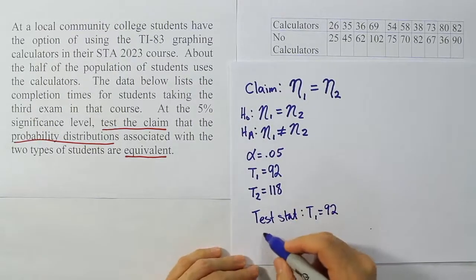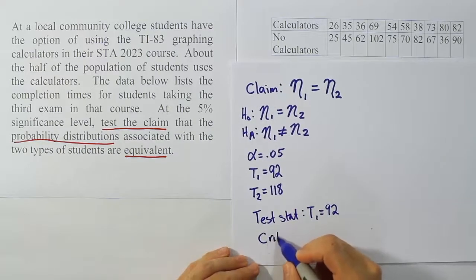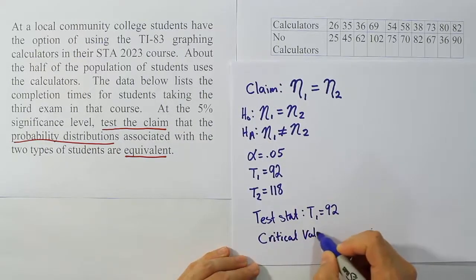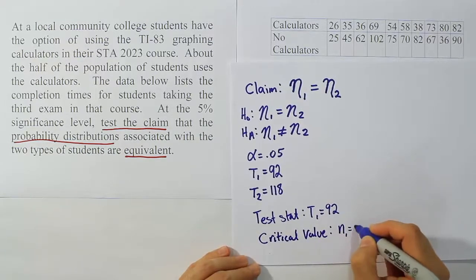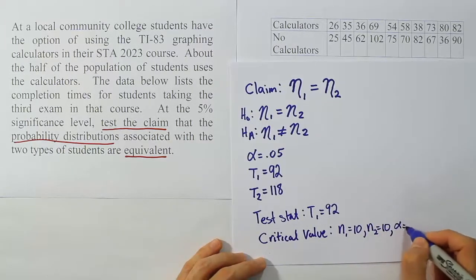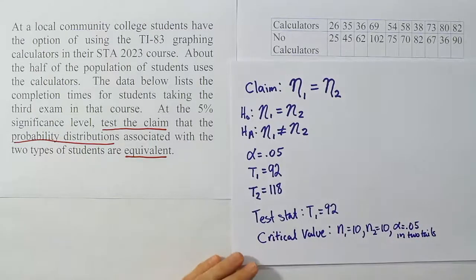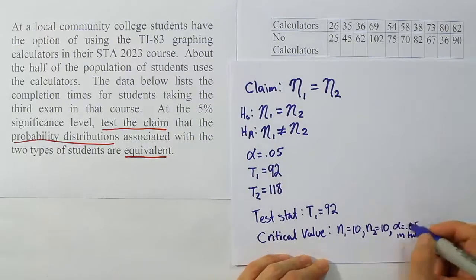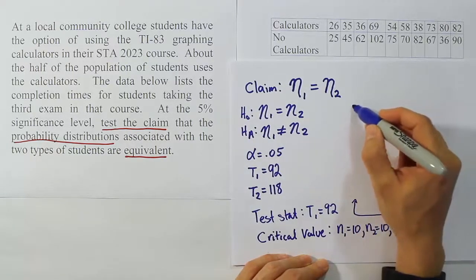Critical value step is going to involve looking at the sample sizes. So n1 is 10, n2 is 10. And then from there we're going to need alpha. Alpha is 0.05 in two tails. Let's keep in mind that that 0.05 is in two tails. And then we have to go to our Wilcoxon rank sum table. Look up these two sample size and that alpha in two tails. And that will give us the critical value for the procedure. I want to remind you that the critical values that we get from the table aren't the whole story. We have to put them on a number line.